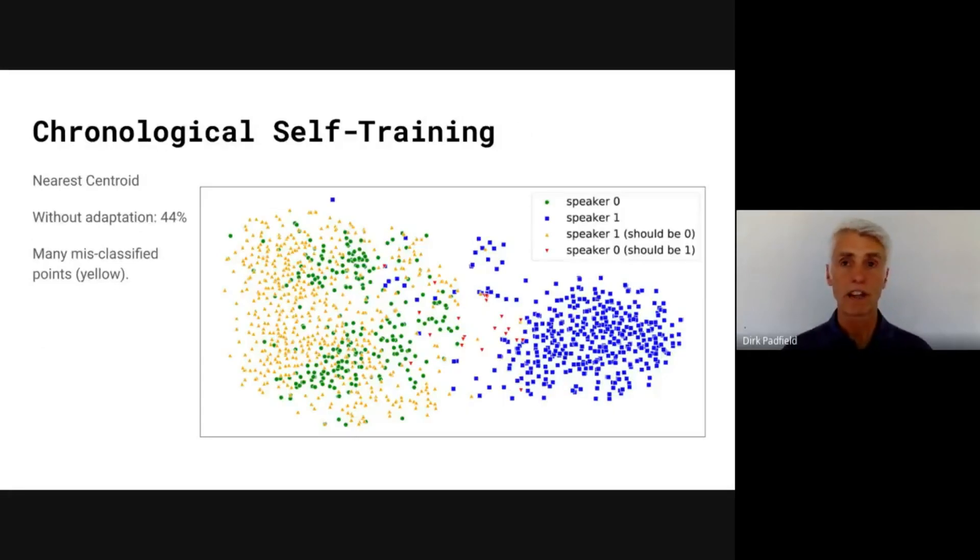If we naively take those training points and we apply a nearest centroid algorithm to it, we see that our results give us a 44% accuracy as shown here by the misclassified yellow points, which is quite a lot because those points didn't represent the true distribution.